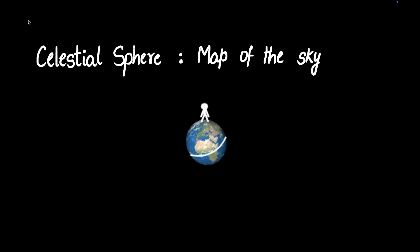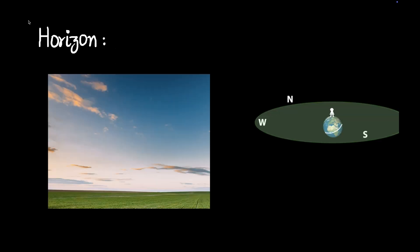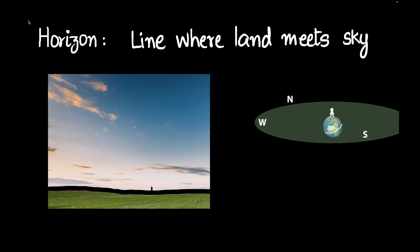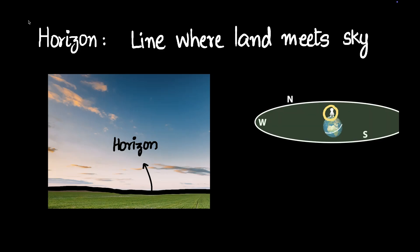Before we begin with the celestial sphere, it's important that we know what the horizon is. The horizon is the line where land meets the sky — or appears to meet the sky. If you started turning towards the left or the right and went one complete circle, you would realize that the horizon is circular. This is how the horizon looks when you have a bird's eye view.